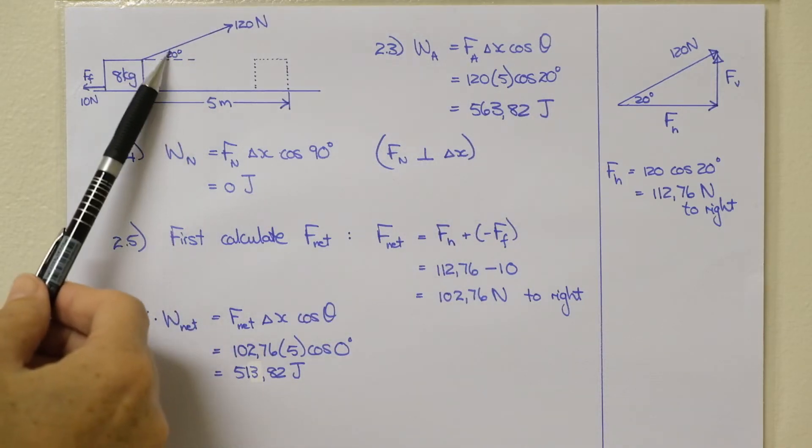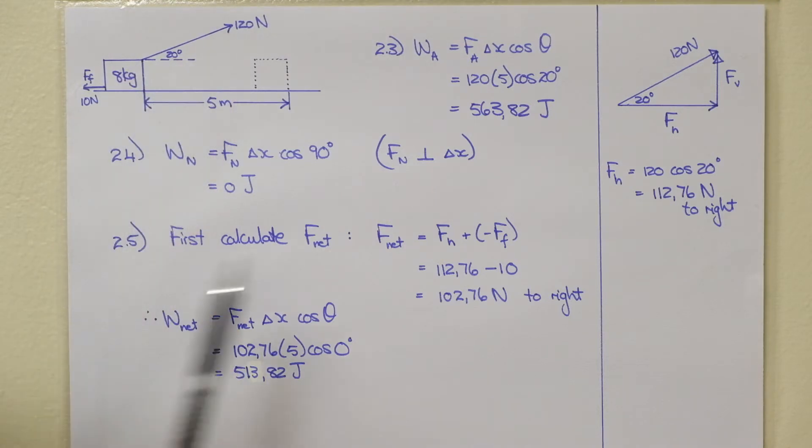The angle between the two is 20 degrees. Your force makes an angle of 20 degrees with the horizontal. Your answer, if you calculate it, is 563.83 joules. It is a rounded off value.